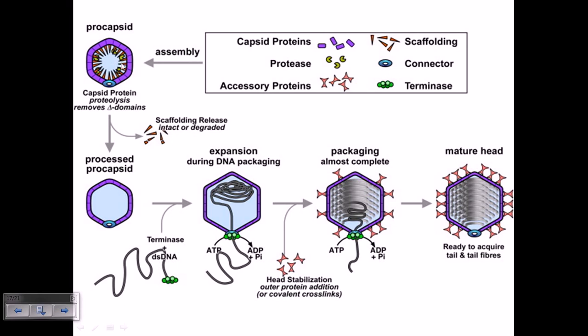be removed because they are not part of the structural integrity—they only help organization. They are proteolyzed using protease enzymes and cut away. What we get is a processed procapsid after cutting the scaffolding out. In this processed procapsid, a channel is formed